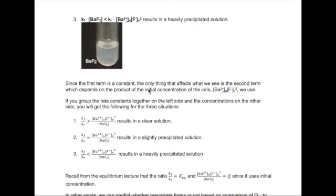In all three scenarios, what determines the formation of the solid is the product of the initial concentration of the two ions, barium and fluoride squared. The rate comparisons we just did can be rearranged slightly where we put the constants together on one side and the concentration terms on the other side. The result becomes the following scenarios where in each case, the ratio of the forward and reverse rate constants is compared to the ratio of initial concentration of products over reactants.